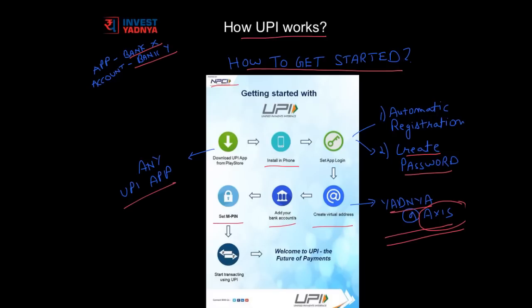The next step is to set an MPIN, which is a mobile PIN. It is a second level of authentication in the UPI app. Many of you may already have a mobile PIN if you have been using mobile banking. If not, you will have to initiate a send money transaction and it will then prompt you to set up the new MPIN. Always remember your MPIN and never share it with anyone. Now you are all set to start transacting using UPI.